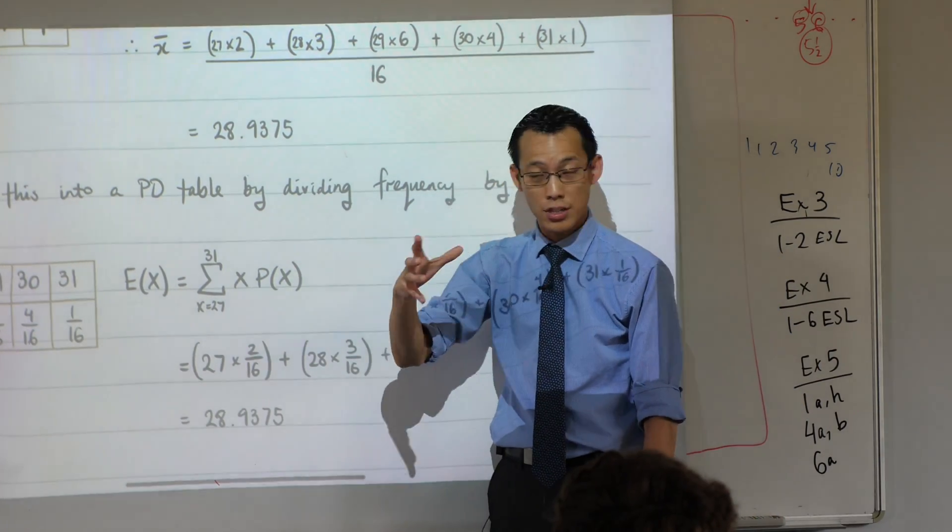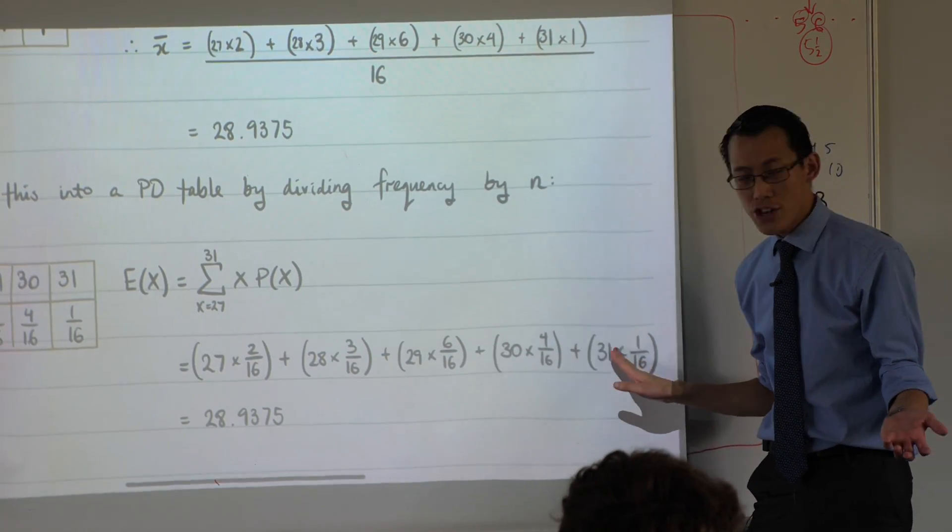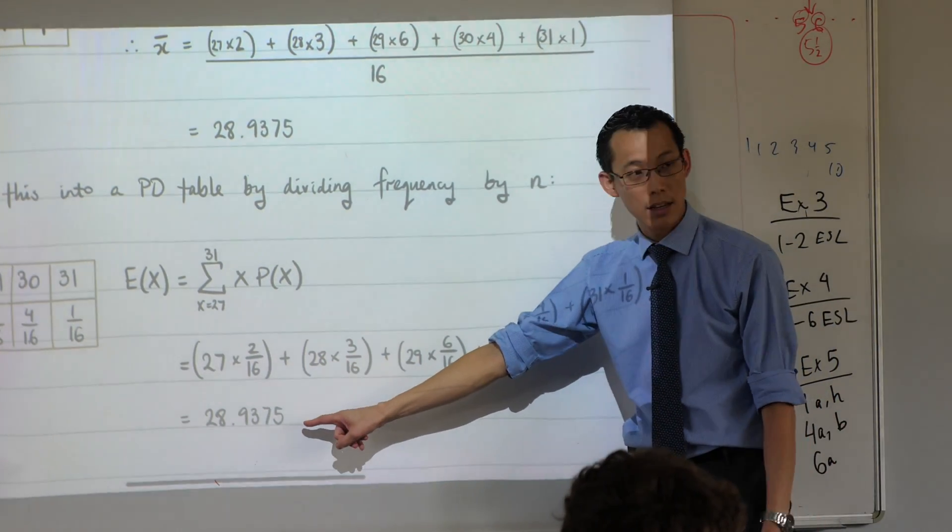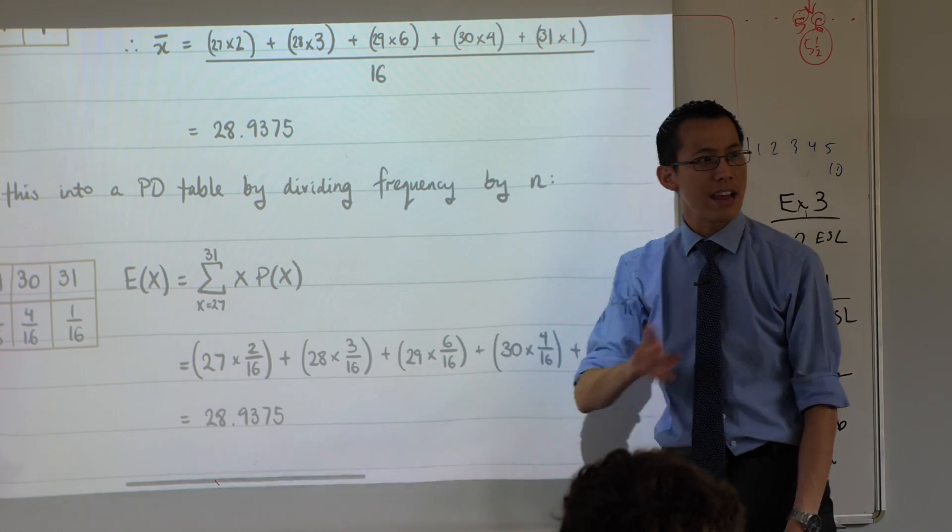So this is what you get. Now hold on a second. When you go ahead and calculate this, you get the same number, the mean and expected value. Now why is that? I've got one last one to show you so you can see the connection.